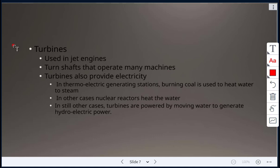Turbines are also used in jet engines. They turn shafts that operate many machines. Turbines also provide electricity. In thermoelectric generating stations, when coal is burned, it is used to heat water to turn it to steam. In other cases, nuclear reactors will heat the water to turn it to steam. And in other cases, turbines are powered by moving water to generate hydroelectric power, which you see in dams.